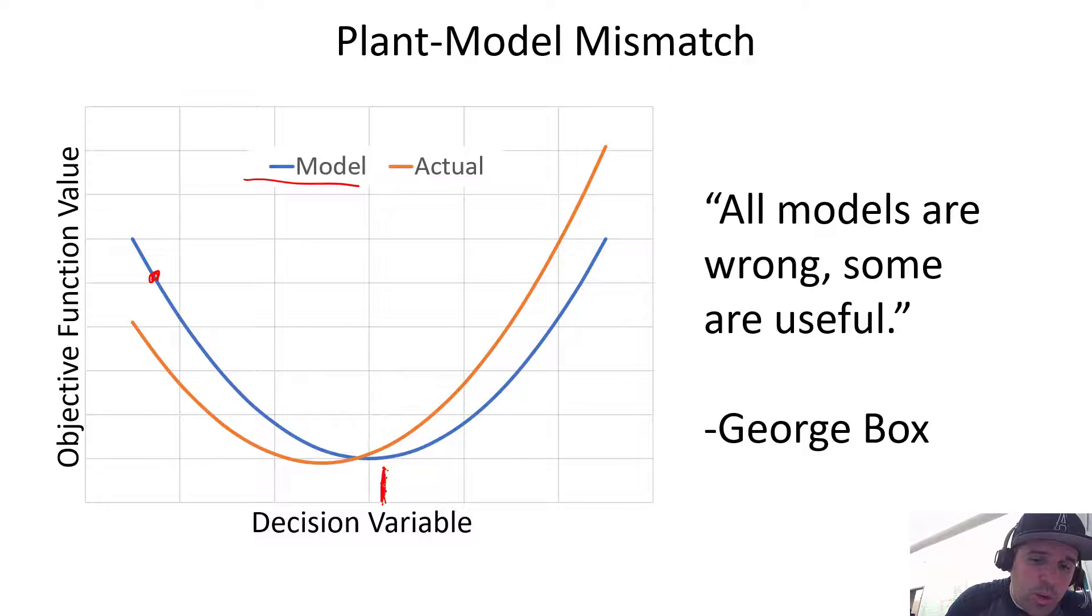So what happens is that if this is the optimal solution that we find and push down, this is where we're going to operate our plant because that's where our model tells us. But in actuality, if this is the actual value of the objective function, if we had a perfect system, we would be finding a value that is not totally optimal. Still good, still much better than our initial solution or our initial guess here. So we still have improved the optimality of our plant but we have not found the true optimum, which is here.